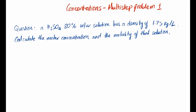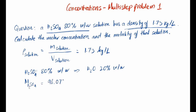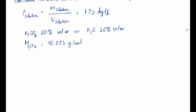Let's summarize the problem. We have density equal to 1.73 kilograms per liter, and the solution is 80% sulfuric acid by weight. Since the question tells us to assume the rest is water, the remaining 20% is water by weight. We also need the molar mass of sulfuric acid, which we can calculate from the periodic table: 98.073 grams per mole.